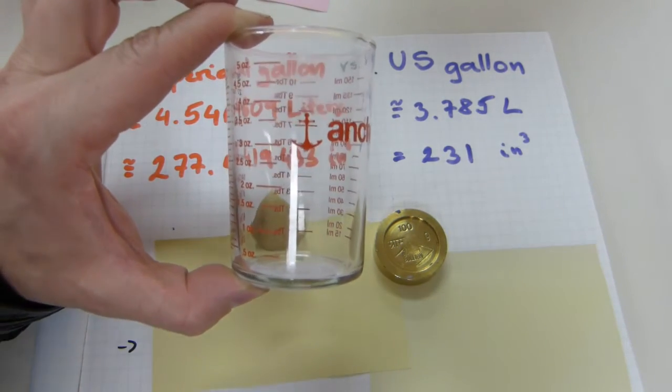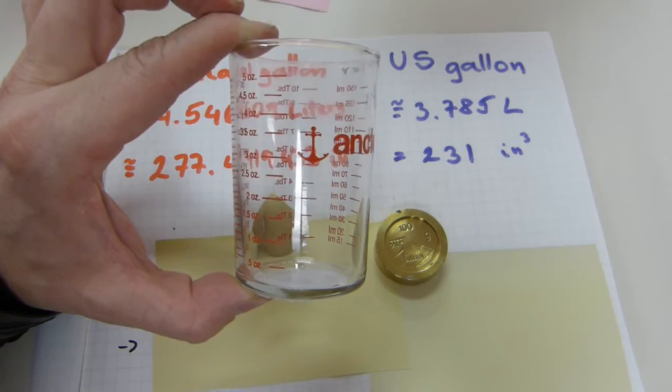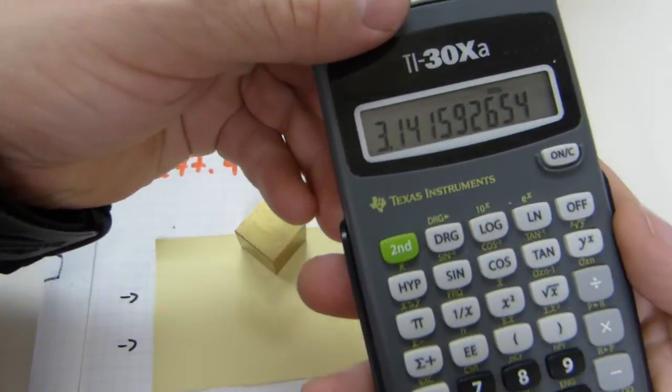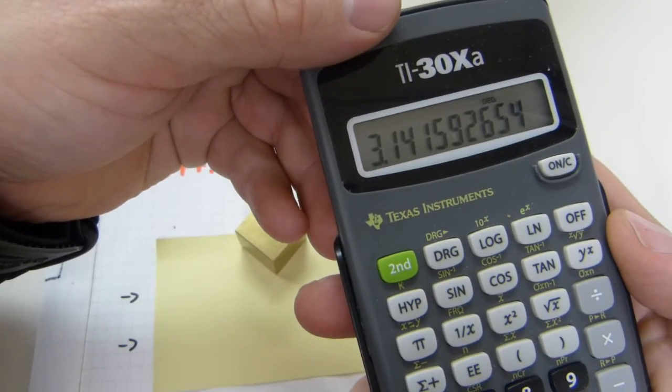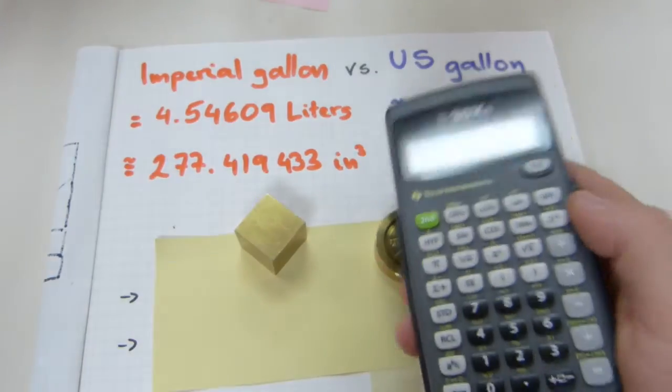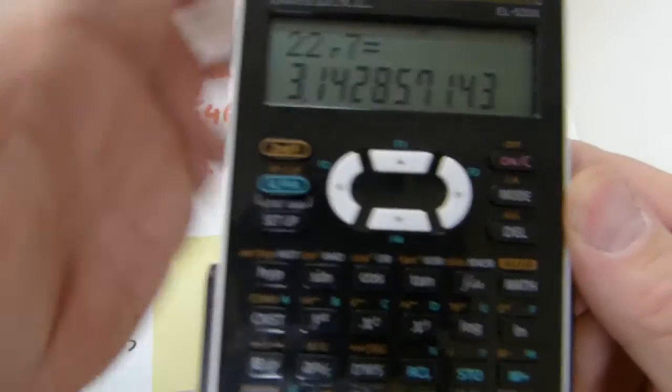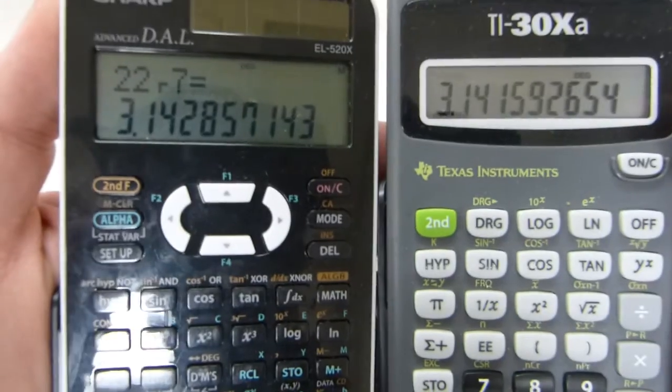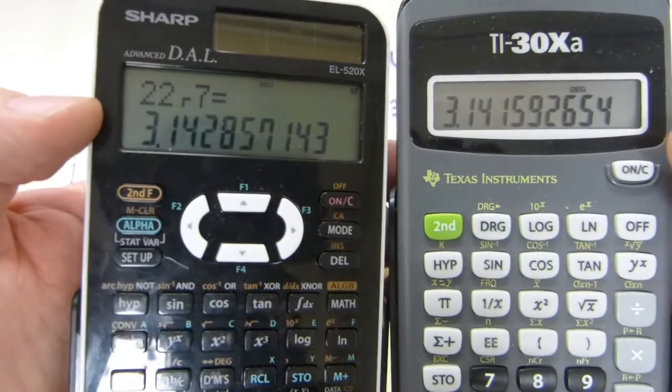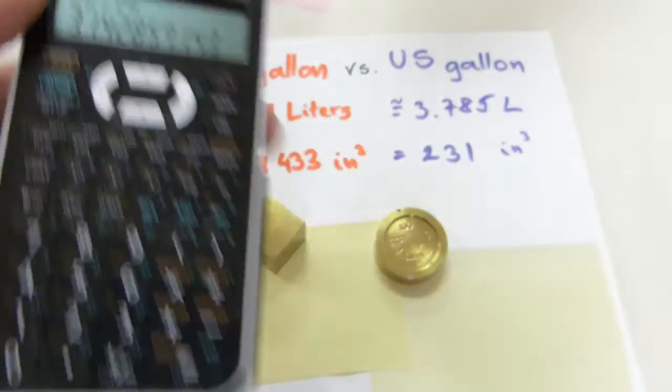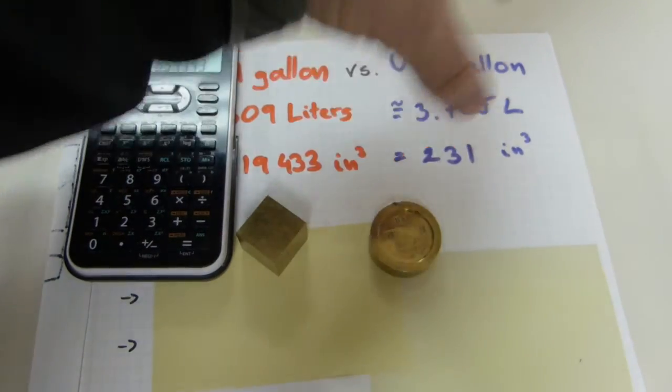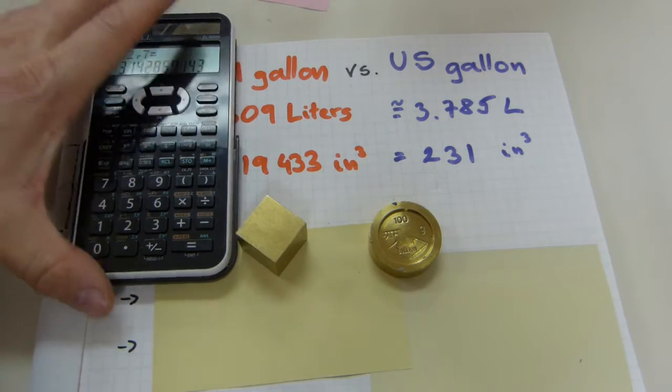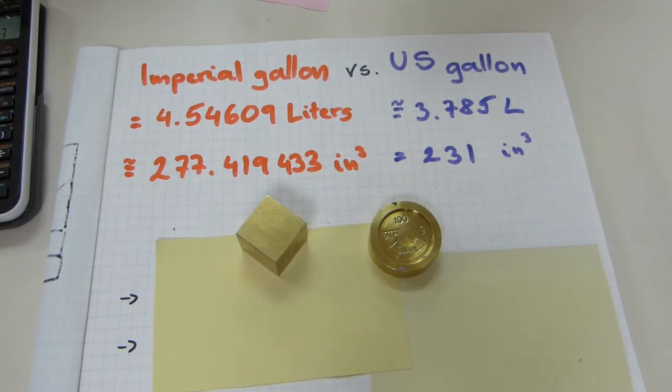If 22 sevenths is used for pi. Now, pi on a modern calculator, of course, with the 10 digits is 3.141592654, but if you use 22 sevenths for pi, it's 3.1428, so only the first two decimal digits match. This one, 22 over 7, was the number that was used in the definition of the gallon back in 1707.